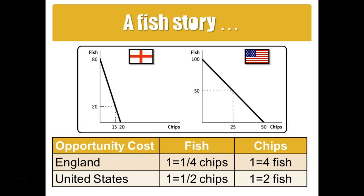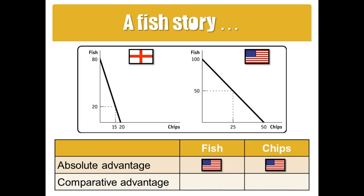The United States gives up fewer fish when it produces chips, so the opportunity cost for the U.S. of producing chips is lower — and the United States should focus on producing chips. So while the U.S. has an absolute advantage in both goods, England is relatively better off making fish and the U.S. is relatively better off making chips. It is always the case that when one trading partner has a comparative advantage in one good, their partner has the comparative advantage in the other — you can have absolute advantage in both goods, but you can never have comparative advantage in both.